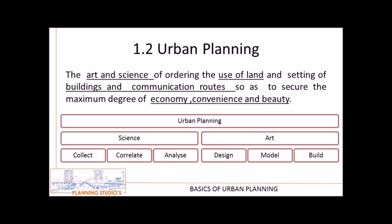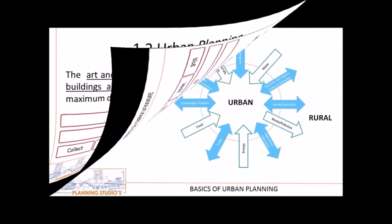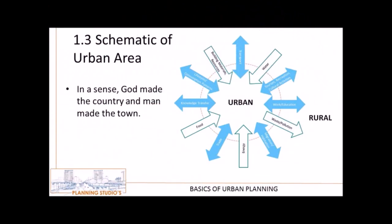Science governs the collection, correlation and analyzing of data, while art governs the design, modeling, and building. This schematic shows the flow of activities in and out of the urban area. Water, food, energy and resources are inputs for any urban area.